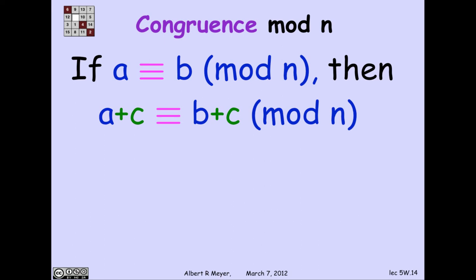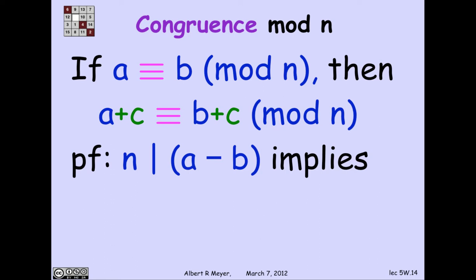And the first fact about congruence says that if a and b are congruent, then a plus c and b plus c are congruent. The proof of that follows trivially from the definition,